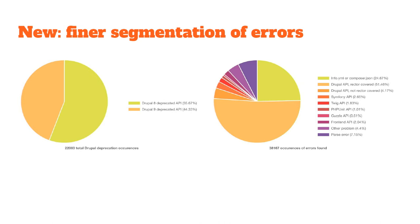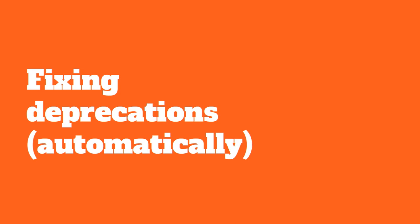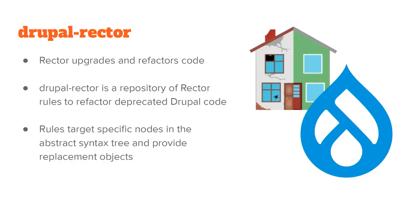The next step is how to fix deprecations automatically. Rector has become a household name — think of it as a way to automatically upgrade and refactor your code. Drupal Rector is a repository of Rector rules. Let's differentiate: PHPStan is a static analysis tool — it reads your code and reports back problems. Rector is reactionary — you write rules that say 'this is a problem, fix it.' PHPStan is for discovery; Rector is for making the fixes automatically so you don't have to do it manually.